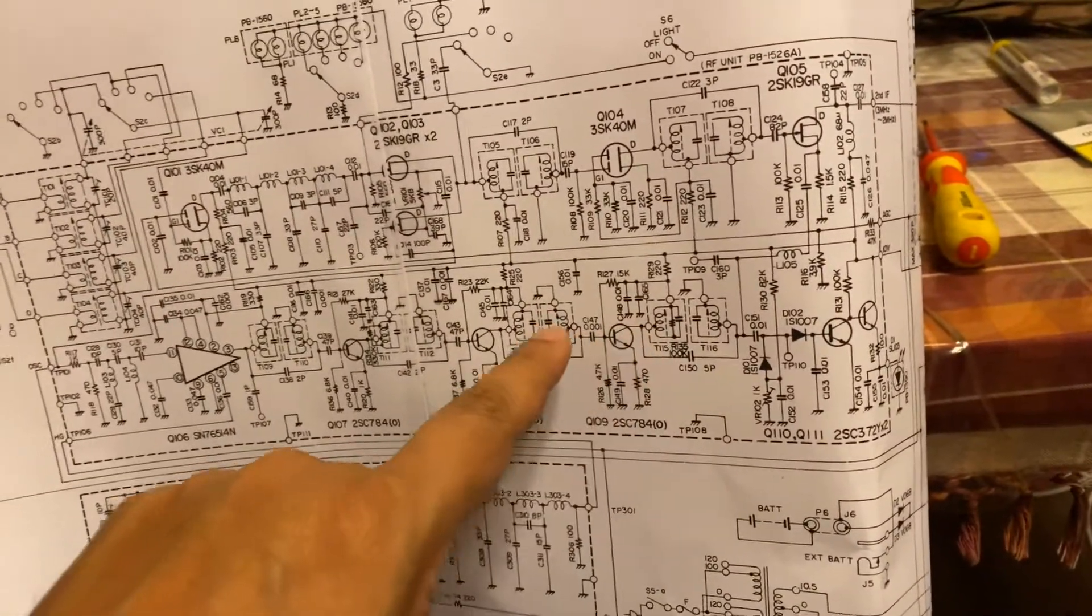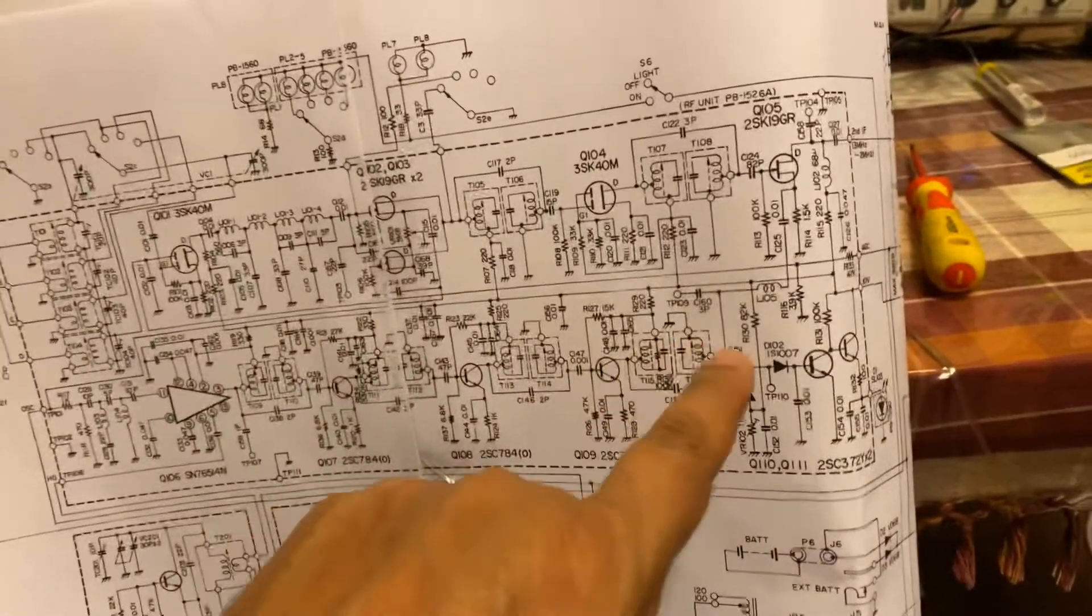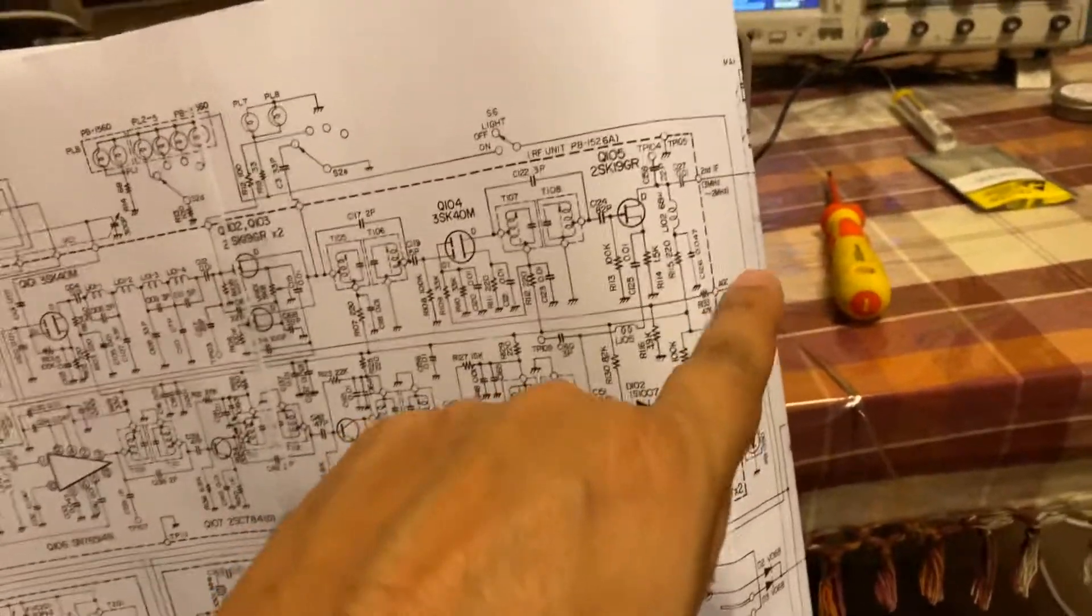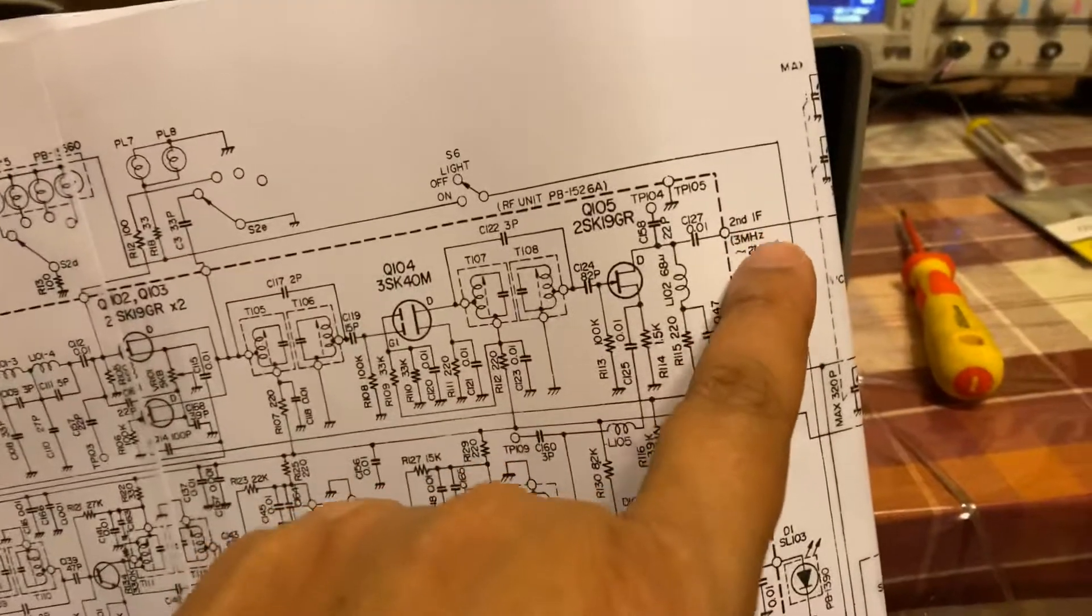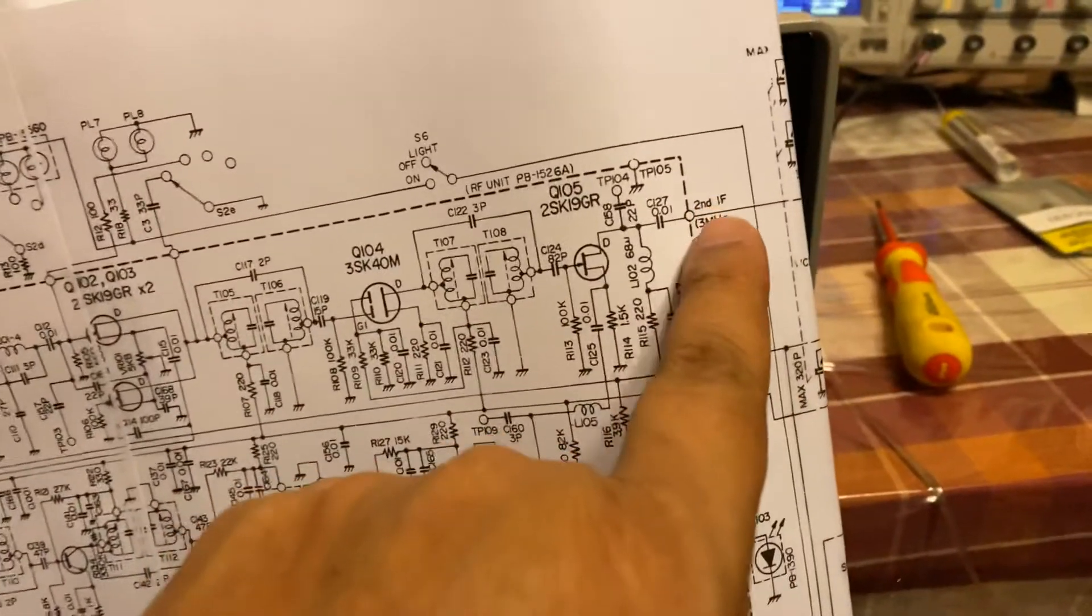And what I found was the signal was coming into the base here, but there was nothing coming out here, which then in turn caused nothing to come out here, where it actually goes to the second board. This is the RF board. So from the RF board to the RF board, there was nothing coming out here.